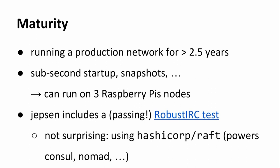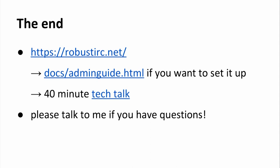With regards to maturity, we have been running a production network for well over two and a half years. In the first half year we found a couple of bugs, but in the two years following we haven't found any others — fingers crossed. All common operations such as node startup, taking snapshots, and so on are optimized to complete in well under a second, and resource usage is so low you could run an entire RobustIRC network on just a couple of Raspberry Pis. The distributed system testing framework Jepsen comes with a passing RobustIRC test, which is not very surprising because we use the HashiCorp Raft library under the covers, which also powers tools such as Consul, Nomad, and others.